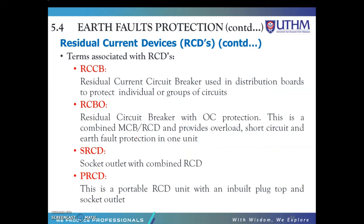These are the terms associated with RCDs. We have the RCCB — residual current circuit breaker — used in the distribution box (DB) to protect individual or groups of circuits. MCB provides overcurrent protection, while RCCB provides human protection. The RCBO combines the residual current circuit breaker with overcurrent protection, providing double protection. Although RCBO is more expensive than MCB and RCCB, it combines MCB and RCD/RCCB functions and provides overload, short circuit, and fault protection in one unit.